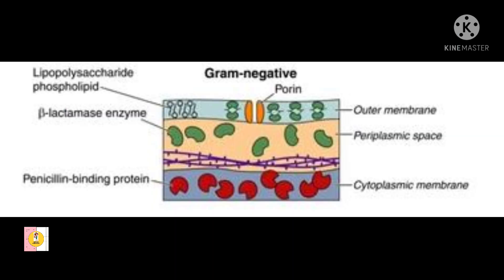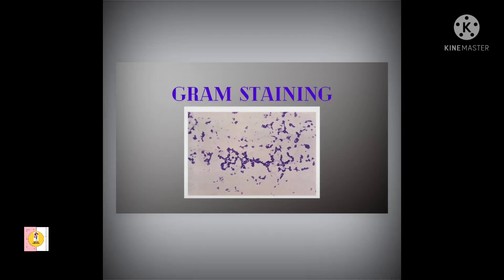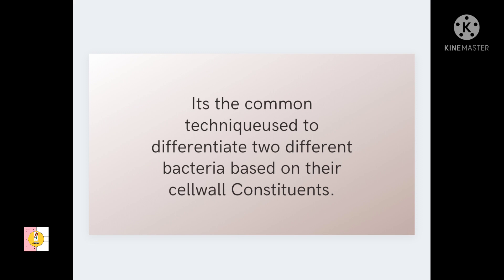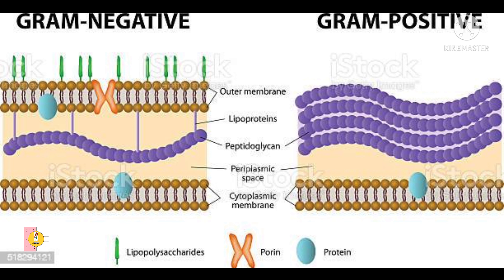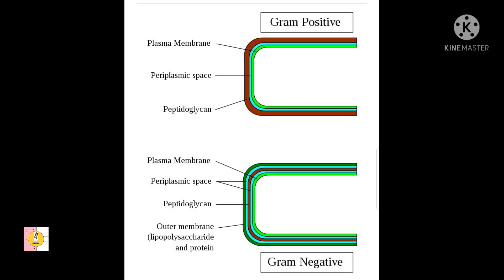A thin peptidoglycan layer is used to differentiate two large groups of bacteria based on their different cell wall constituents. As we have seen, the different cell wall constituents are the peptidoglycan layer and the lipid membrane. The gram stain technique is used for the identification and classification of bacteria.